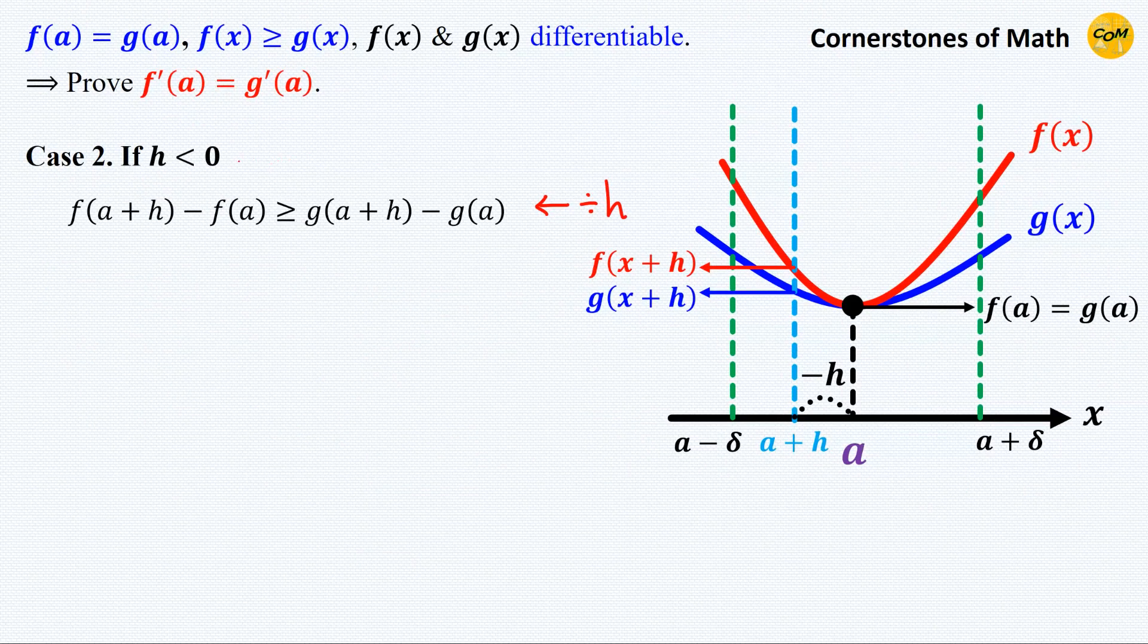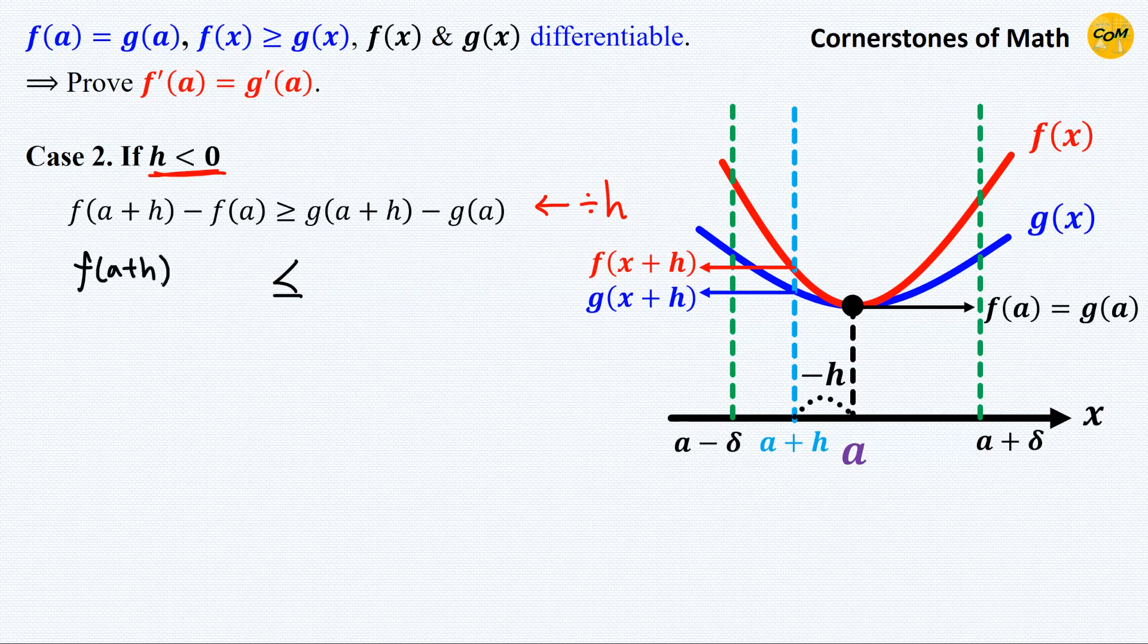In case 2, if h is negative, then dividing by h changes the direction of the inequality sign. So we have [f(a + h) - f(a)] / h is now less than or equal to [g(a + h) - g(a)] / h.